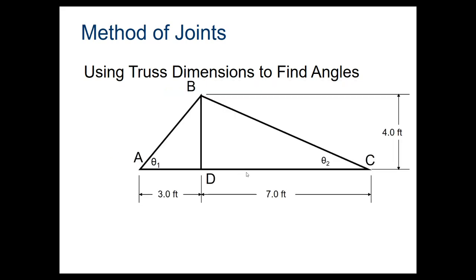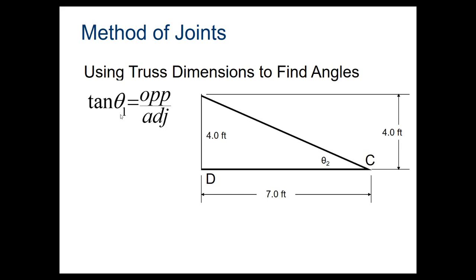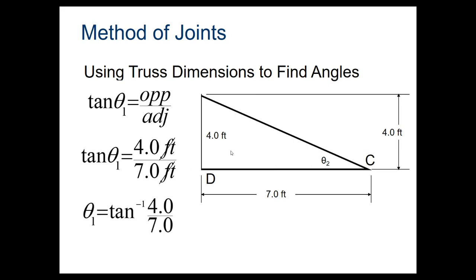For the other side, theta 2 uses opposite = 4 and adjacent = 7, so tangent(theta2) = 4/7. Inverse tangent gives theta2 = 29.745 degrees. These two angles — 53.13° and 29.745° — are the last pieces of setup information we need, along with the reaction forces, before we can begin calculating individual member forces.